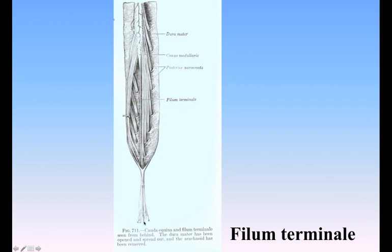The filum terminale consists mainly of fibrous tissue, continuous above with that of the pia mater. Adhering to its outer surface are a few strands of nerve fibers which probably represent rudimentary second and third coccygeal nerves. Further, the central canal of the Medulla Spinalis extends downward into it for 5 or 6 cm.